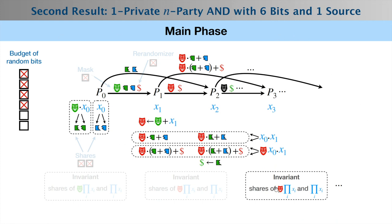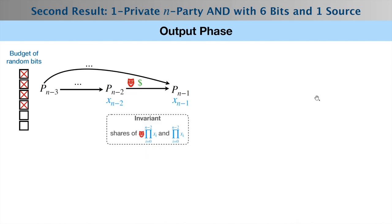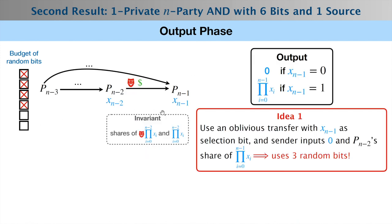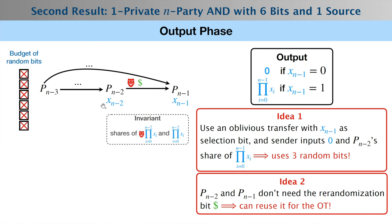For the second result, we maintain a very careful invariant throughout the protocol using only 4 random bits. We transmit this invariant in a line throughout the parties. Then we use 2 more random bits to complete the protocol, carefully reusing some of the bits from the beginning of the protocol.